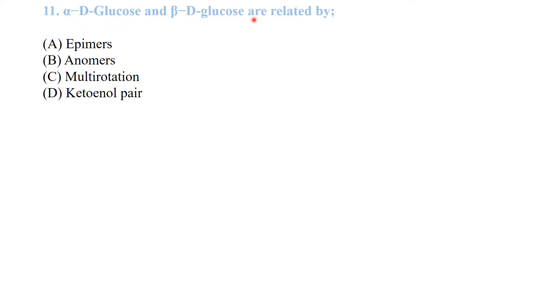Alpha-D-glucose and beta-D-glucose are related as anomers — they exhibit mutarotation. All such pairs are called anomers.